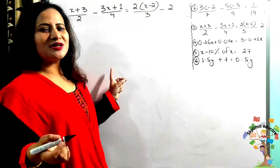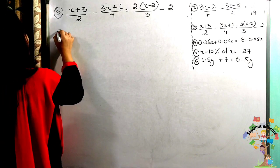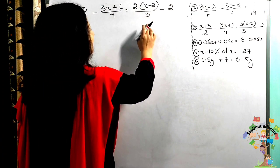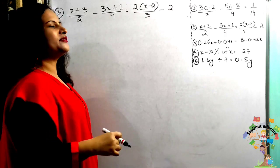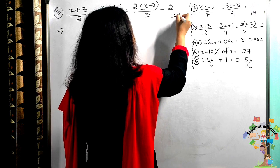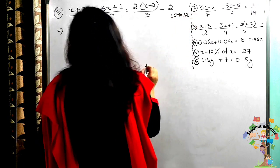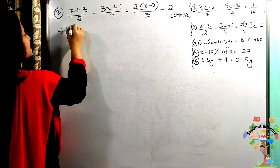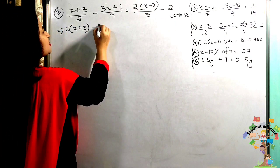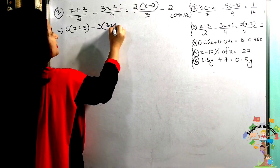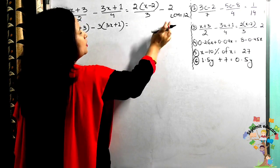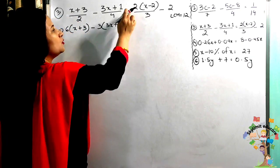Now let us come to the next question. Here the denominators are 2, 4, and 3, and one term has no denominator (coefficient 1). The LCM of 2, 4, and 3 is 12. So: 12 ÷ 2 = 6, giving 6 multiplied to (x + 3); minus 12 ÷ 4 = 3, giving 3 multiplied to (3x + 1); equals 12 ÷ 3 = 4, giving 4 multiplied to 2 which is 8.